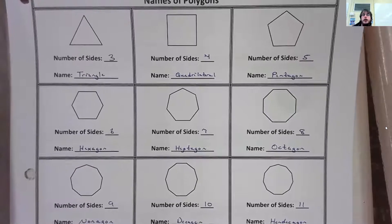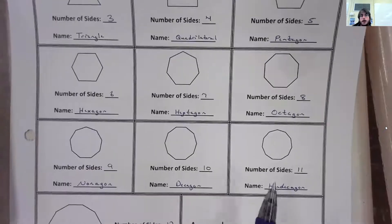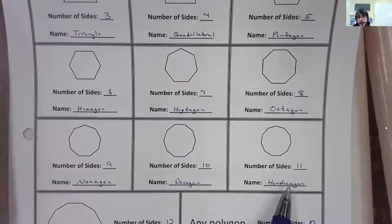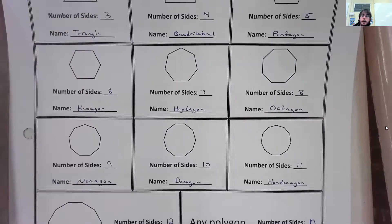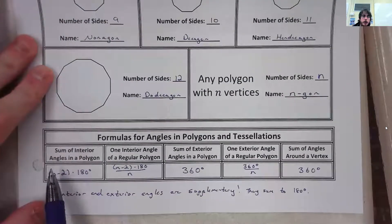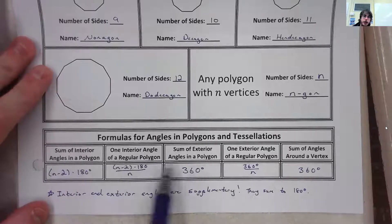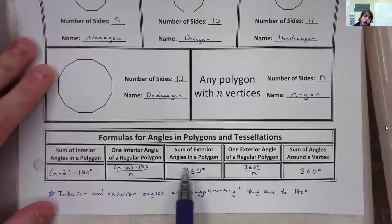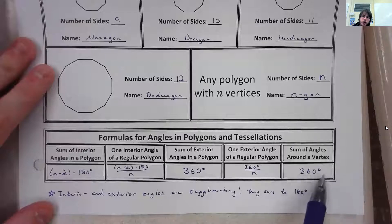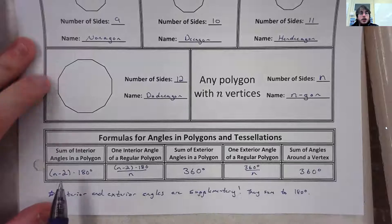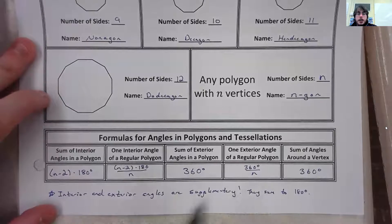The one you do need to take note of that we didn't really talk about much in class is the 11-sided polygon, which is known as a hendecagon. So if you see hendecagon, it has 11 sides. All the others we covered in class. At the bottom are some formulas to look over: the sum of interior angles is (n−2)×180; one interior angle is (n−2)×180 over n; the sum of exterior angles is always 360; the sum of angles around a vertex is always 360; and one exterior angle is 360 over n. Also keep in mind that interior and exterior angles are supplementary, meaning they sum to 180 degrees.